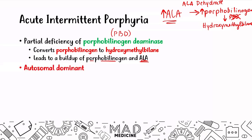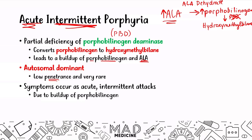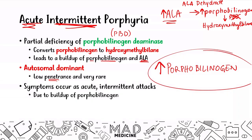This is an autosomal dominant disorder but it has very low penetrance and is also very rare. Although we're teaching you this, just keep in mind it's a very rare disorder. The symptoms occur as acute intermittent attacks — that's why it's called acute intermittent porphyria. It's all due to the buildup of porphobilinogen. If you can remember one molecule for acute intermittent porphyria, it's porphobilinogen, resulting from decreased activity of porphobilinogen deaminase.